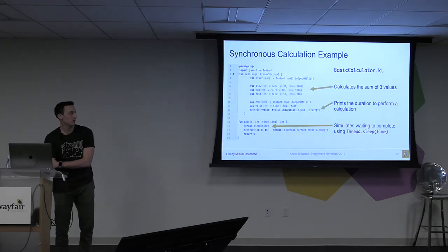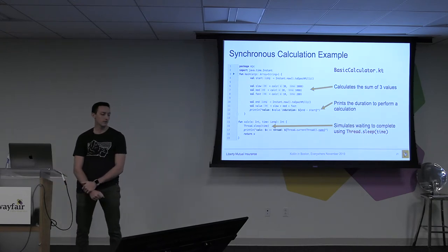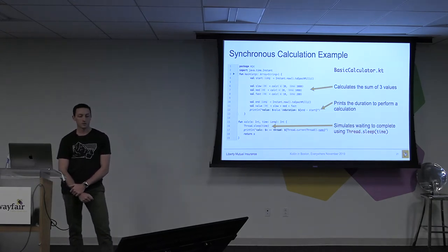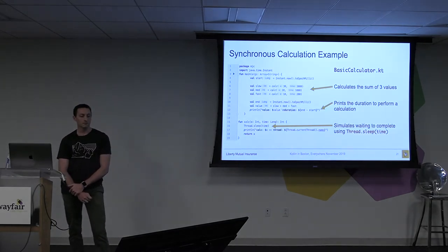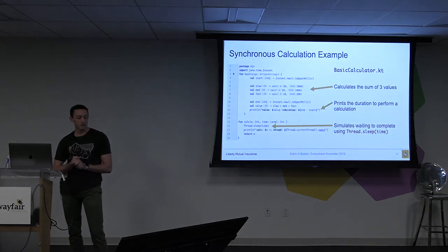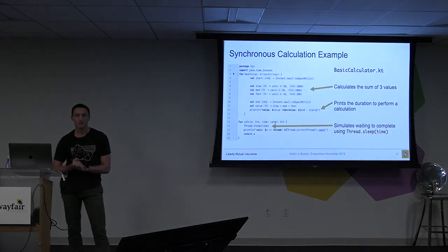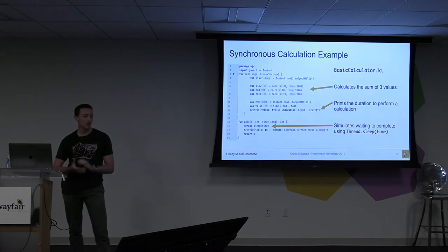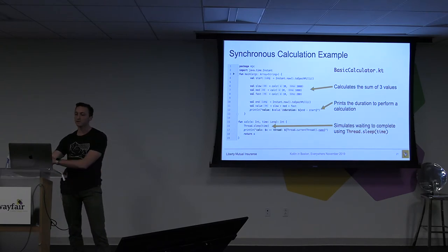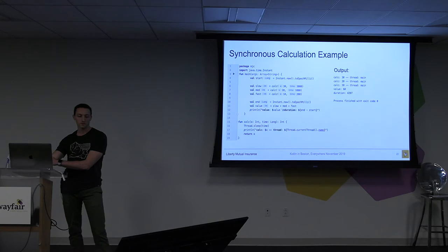Here's our sample code. On lines six through eight we're doing three calculations and getting the sum, defined on line 11. Those calc functions don't actually do anything except call Thread.sleep, which pauses the program for a given time. Then it prints out the value and the duration it took. When we run this, we get an output of 30, 20, 10 — synchronous with lines six, seven, and eight. If this was asynchronous, we would see 10, 20, 30.